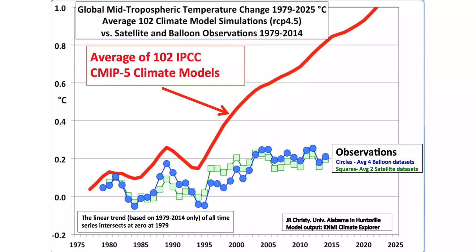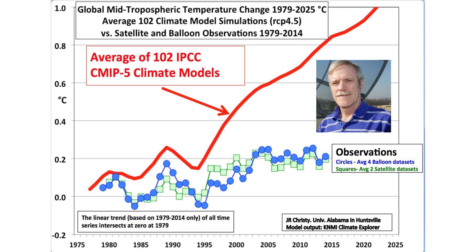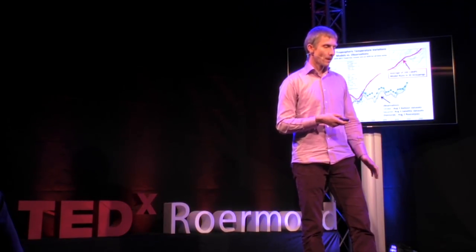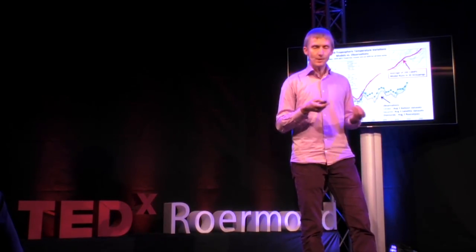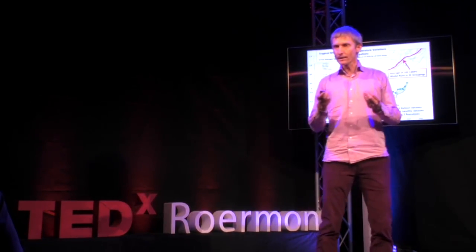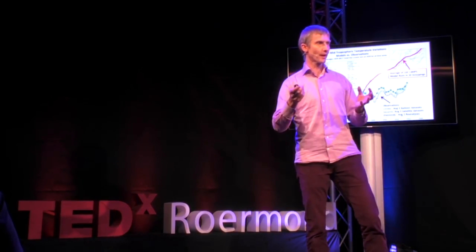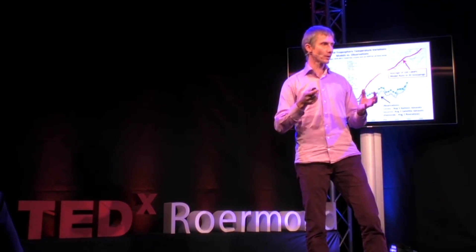This video is about a graph put out by climate researcher and skeptic John Christie. It was never published and is used extensively by people who reject mainstream climate science, trying to point out that climate models are useless. The graph has even been used in congressional hearings in the US.